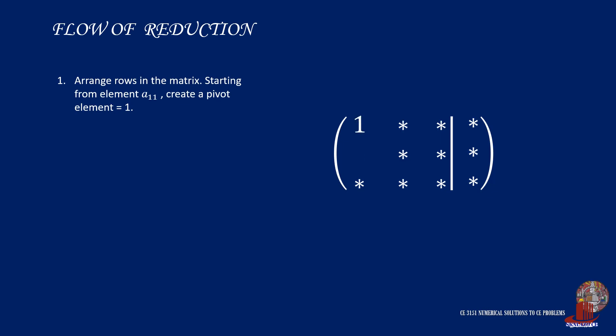After element 1,1 is reduced to a value of 1, we eliminate the other elements in the first column, that is make them zero, and this is done by using row operations.